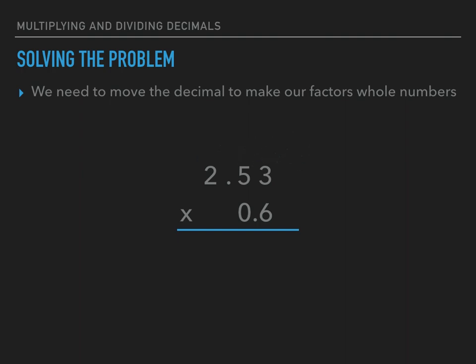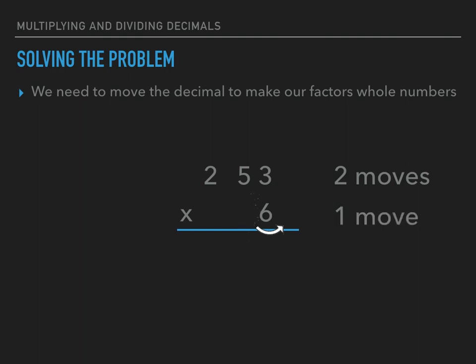In my first factor I need to move the decimal two times. I've done two total moves to make my factor whole. On my last factor I have to move that decimal place one time. It is important when multiplying decimals to know how many times we've moved that decimal out of the way, because that information is going to come in handy later. We have done a total of three moves of a decimal.